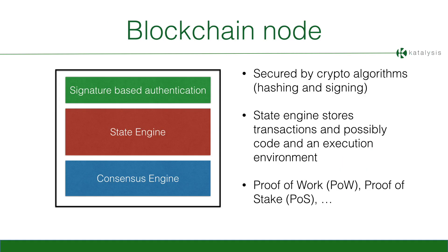The way we look at a blockchain is we separate it into three big parts. The first top layer is the signature system — that's what allows each node to be comfortable that you're really who you say you are. The second is the state engine; in the case of Bitcoin, which is mostly exchanging value, it's very simple states — how many Bitcoins do you own, tied to a specific address. The lower level is the consensus engine. For Bitcoin it uses proof of work, which is extremely inefficient and consumes a lot of energy. Newer blockchains use proof of stake or derivatives, which are much more efficient computationally.